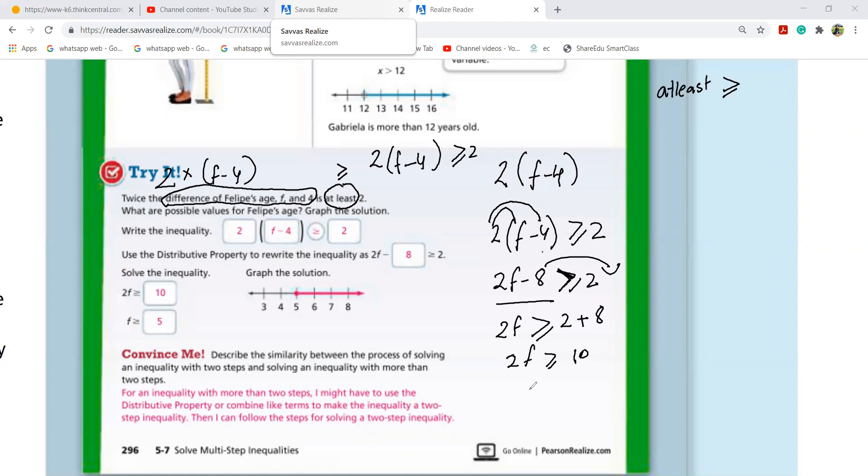10. Now, tell me, Dishan. Where does 2 go? This is multiplication with f. 2 times f. So, there will be a division. Very good. Excellent here, Dishan. This is what I want you to say. Multiplication becomes division. So, my answer is f greater than or equal to 5.